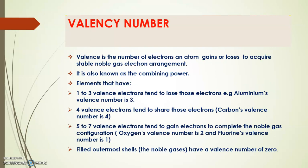So now let's look at valence number. What is valence number? Valence number is actually the number of electrons that an atom gains or loses to acquire stable noble gas electron arrangement. The implication here is that each and every atom seeks stability. For it to be stable, it has to have an electron arrangement like that of those elements that are found in group 8, which are called noble gases — those that have the outer shells filled. This valence number is also known as the combining power of an atom.